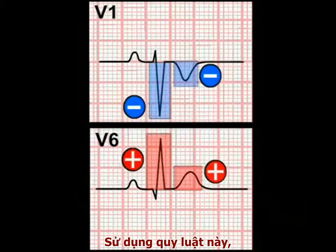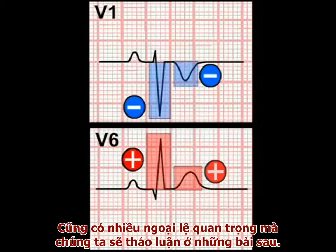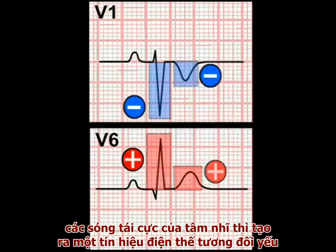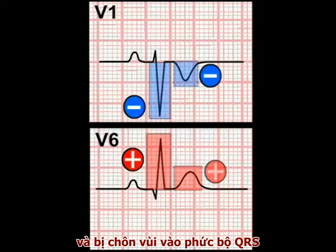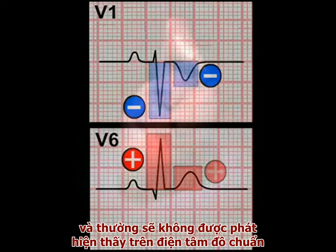To use the jargon, in non-diseased hearts, the QRS complexes and T-waves tend to be concordant. There are important exceptions to this rule which we will deal with shortly. Just to tie up a loose end, atrial repolarization produces a relatively weak electrical signal which is buried in the QRS complex and is generally not detectable on a standard 12-lead ECG.